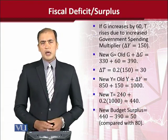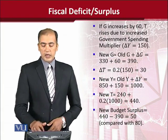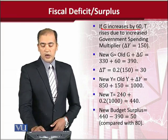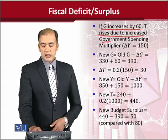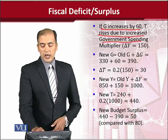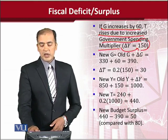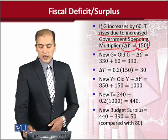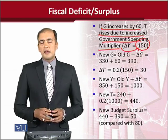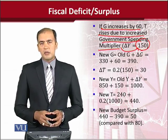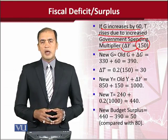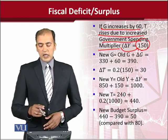Now let's take a variant of the same example. We are assuming that government expenditure has increased by 60. This can cause an increase in taxes because of the increased government spending. When there is increased government spending, a multiplier will be in action, giving rise to additional income, which then affects the level of tax — because tax has an induced part in which income is a determining variable. A change in income should affect the induced part of tax revenue and hence the overall tax.